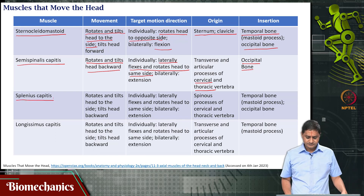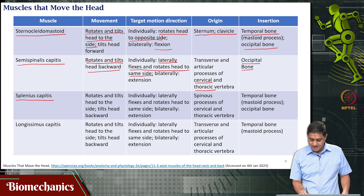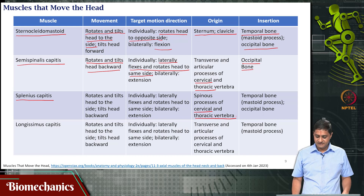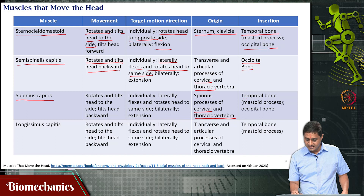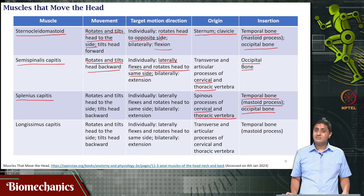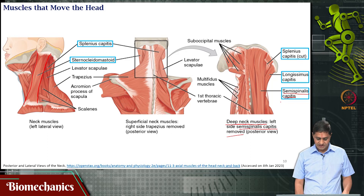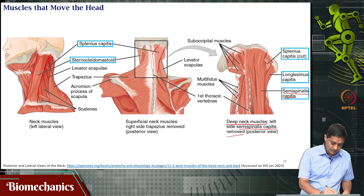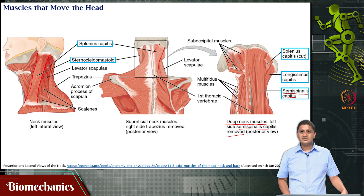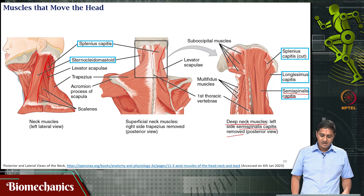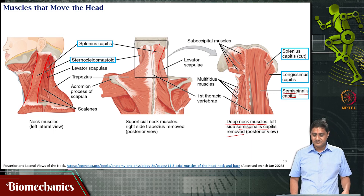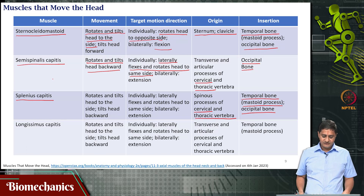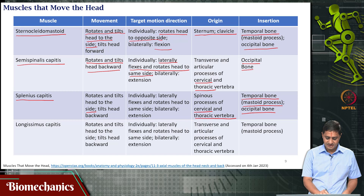The next muscle is the splenius capitis. Its origin is at the level of the cervical and thoracic vertebrae, and its insertion is at the temporal bone — specifically the mastoid process — and the occipital bone. It is a relatively small muscle; unlike the sternocleidomastoid it is relatively difficult to find, but it is not a very deep muscle. Its function is to rotate and tilt the head to the side, and to tilt the head backward.